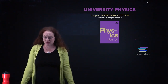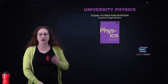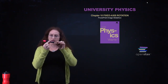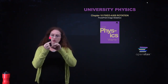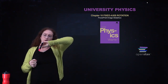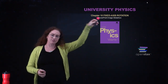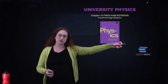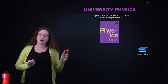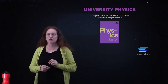Now we move into fixed axis rotation. This means that you have something which is rotating, but it's rotating about a point that is fixed. This is different from, for instance, if you kick a ball and it can rotate at the same time that it's moving — that it has translational motion — that's a much more complicated problem. So we start with fixed axis rotation.